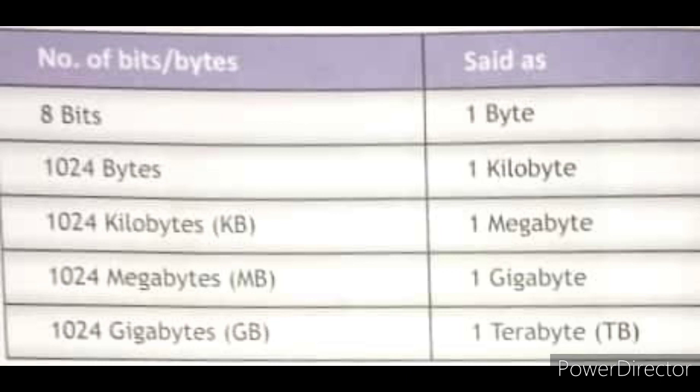8 bits is equal to 1 byte. 1024 bytes is equal to 1 kilobyte. 1024 kilobytes is equal to 1 megabyte. 1024 megabytes is equal to 1 gigabyte. These were the different units of storage of data.